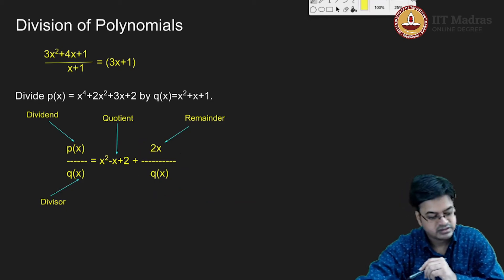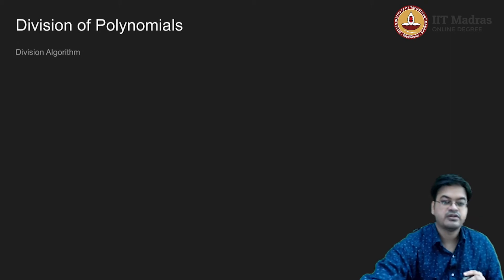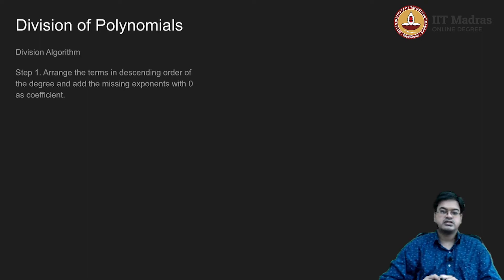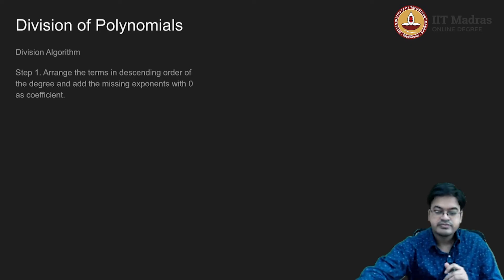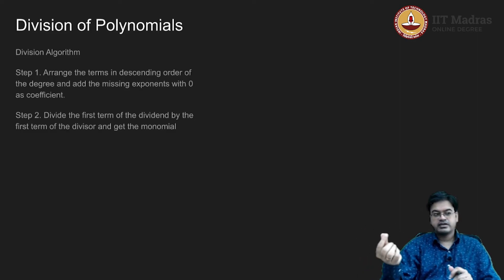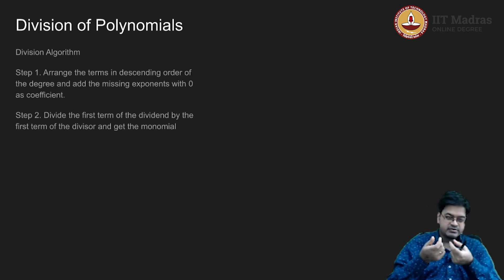Let us go and study the algorithm. For division of polynomials, we will use the following division algorithm which we have derived just now. In the first step, we will arrange the terms in the descending order of degree and add the missing exponents with 0 as a coefficient. Then we will take the leading monomials and divide the leading monomial of the dividend by the leading monomial of the divisor.